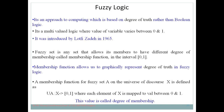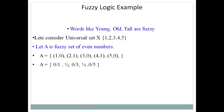The membership function for a fuzzy set A on the universe of discourse X is defined as a mathematical equation where X maps to values between 0 and 1. Words like young, old, and tall are fuzzy because they are not fixed or crisp.